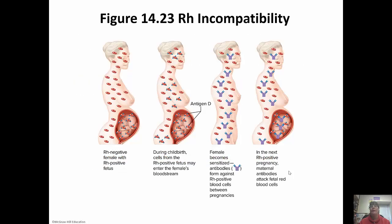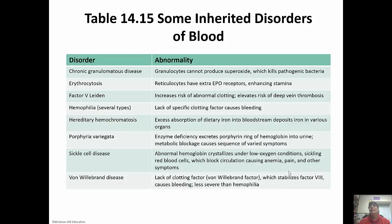Here's a picture showing an RH negative female with an RH positive fetus and what will happen. Some other inherited disorders: erythrocytosis — reticulocytes have extra EPO receptors, which enhances stamina. Sickle cell, we talked about in the last part. Hemophilia — you have specific clotting factors missing. Hemophilia was really prominent in Queen Victoria's family. It is a sex-linked disorder carried on the X chromosome. Factor VIII is the most common missing clotting factor.